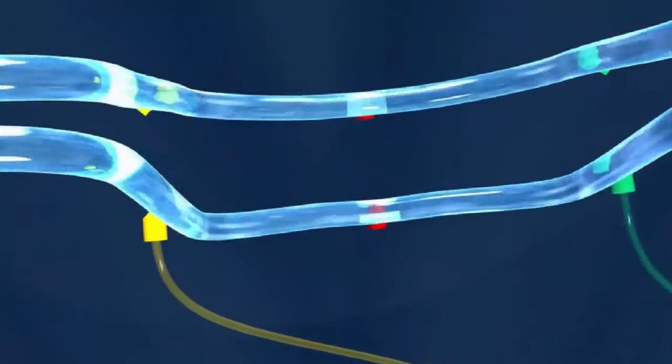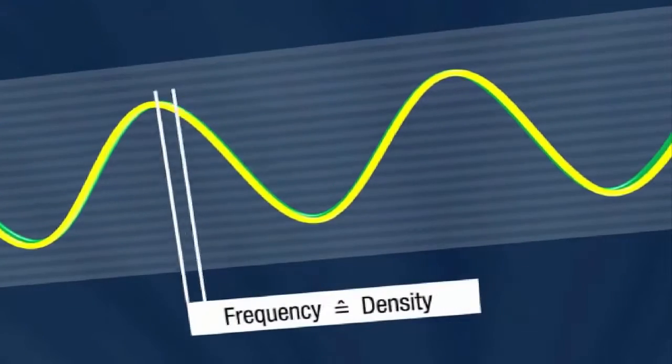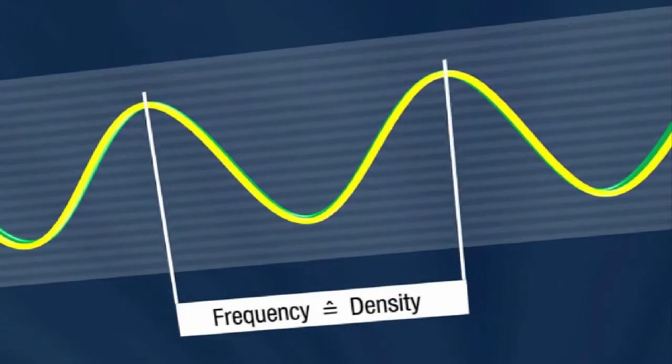Should the density of the media need to be determined, it is simply computed by evaluation of the oscillation frequency of the measuring tubes.